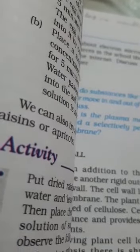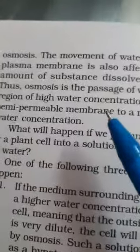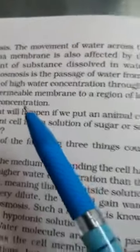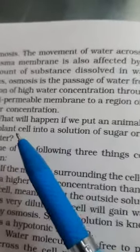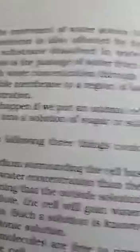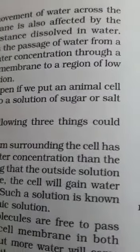The movement of water across the plasma membrane is also affected by the amount of substance dissolved in it. Osmosis is the passage of water from a region of high water concentration through semi-permeable membrane to a region of low concentration. It is a movement of water from high concentration to low concentration.